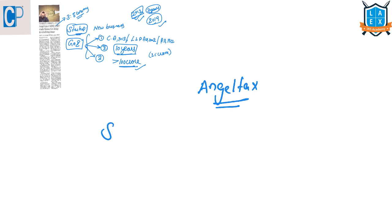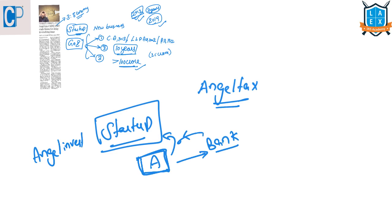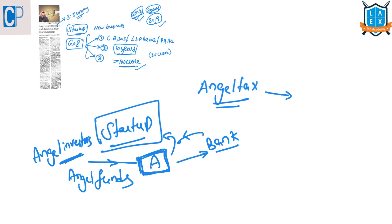Now let us see about the concept known as Angel Tax. A startup is a new venture whose business model might be risky. For example, person A wants to set up a startup and went to a bank seeking a loan, but the bank said it cannot understand the business model and it is too risky to invest. So from where will A get the capital? It is angel investors — who could be friends, family, or relatives — who will invest in the idea. Such investors are known as angel investors and the funds they provide are known as angel funds.